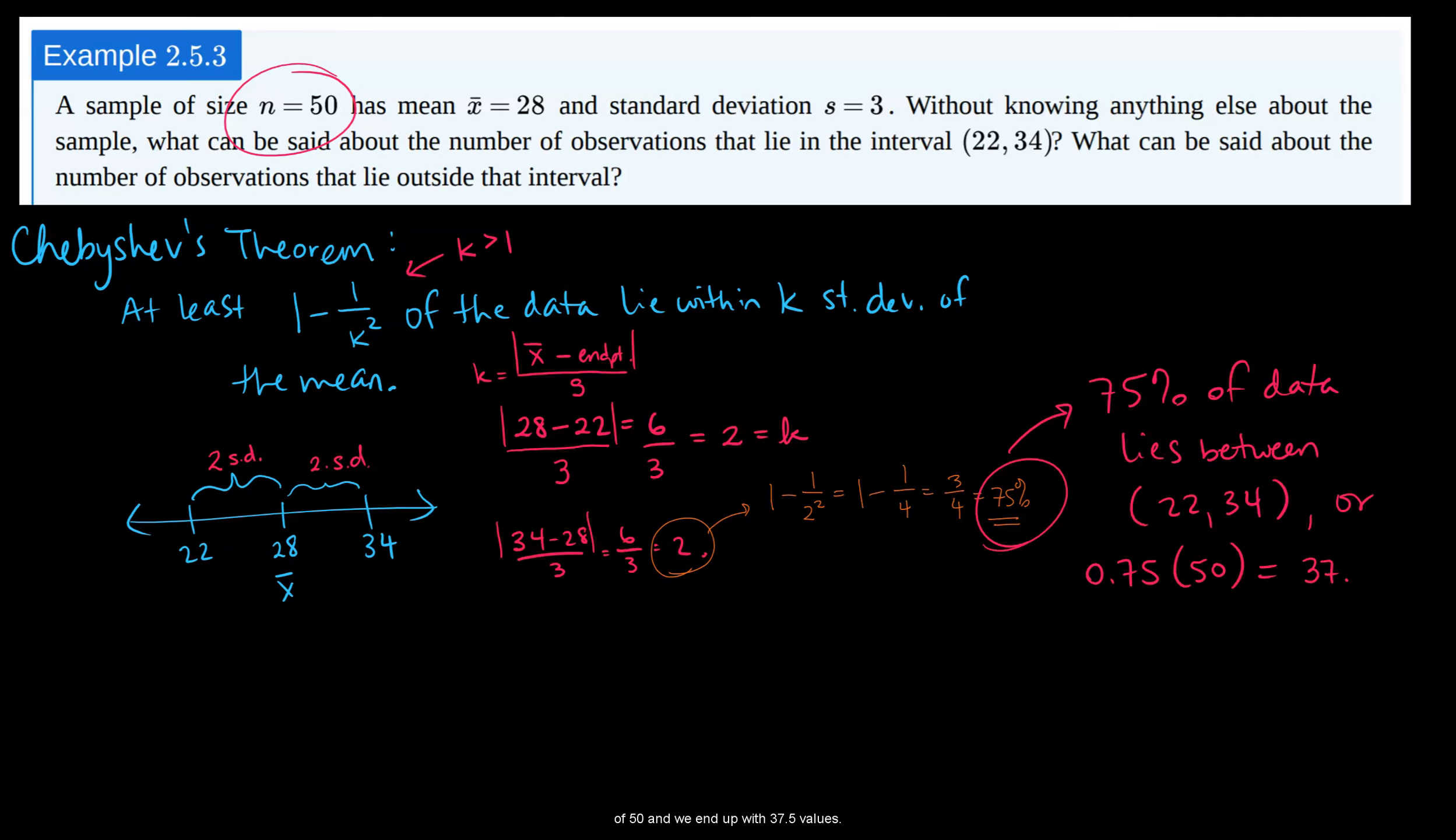and we end up with 37.5 values. And this is another one of those possible ambiguous answers in statistics. I would round this down to 37 and say at least 37.